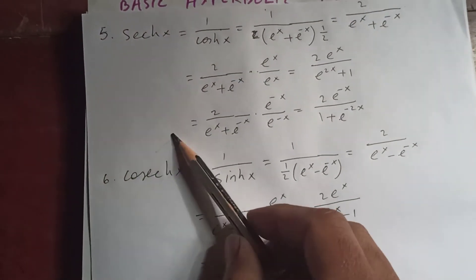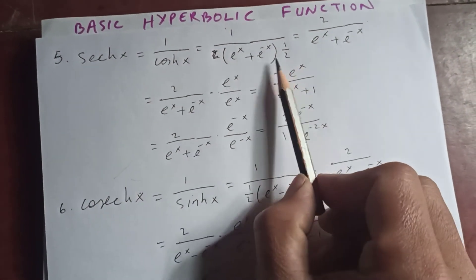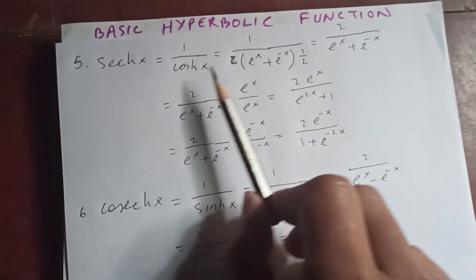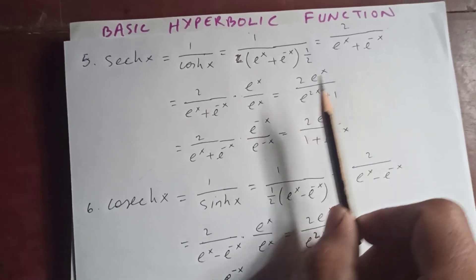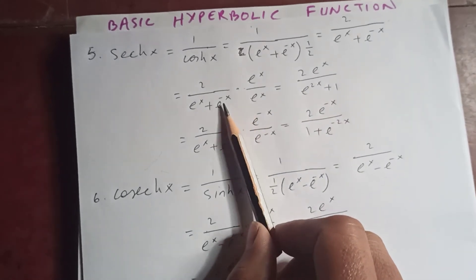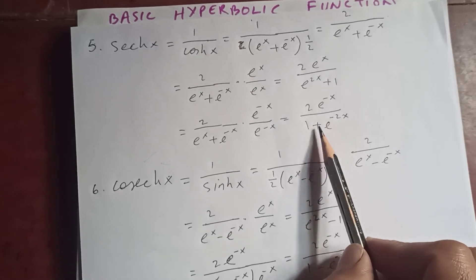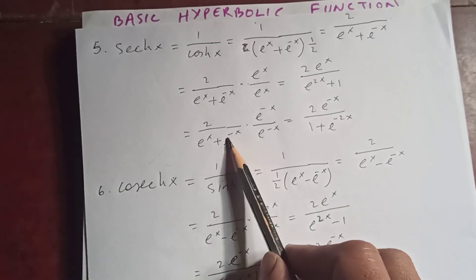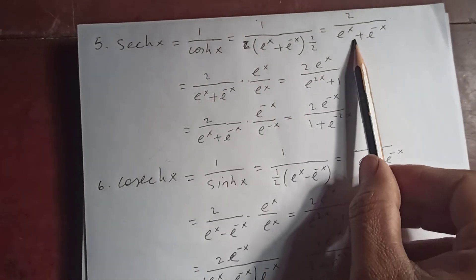Sech hyperbolic of x is 1 divided by cosh hyperbolic of x. Since cosh(x) is (e to the x plus e to the negative x) over 2, sech(x) equals 2 upon (e to the x plus e to the negative x). Multiplying by e to the x gives 2e to the x upon (e to the 2x plus 1). Multiplying by e to the negative x gives 2e to the negative x upon (1 plus e to the negative 2x). So sech(x) can be expressed in these three forms.